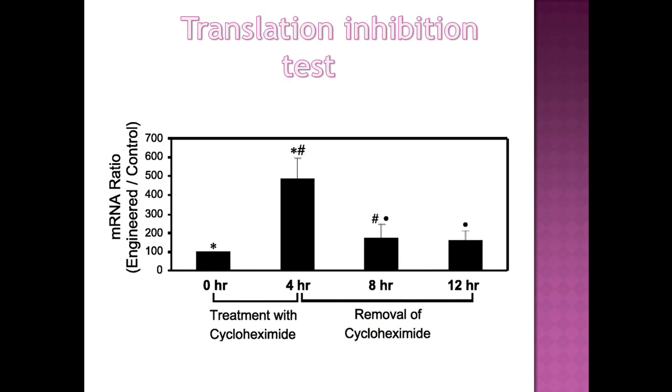The engineered over control pre-proinsulin messenger RNA ratio at time 0 was defined as 100%. After 4 hours of cycloheximide treatment, this ratio increased to 490% compared to the cycloheximide free culture. Upon withdrawing cycloheximide to resume translation, the engineered over control pre-proinsulin messenger RNA ratio decreased toward the basal level.